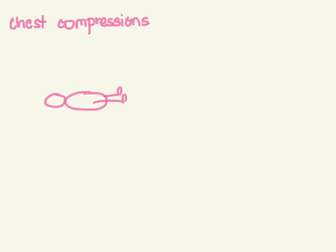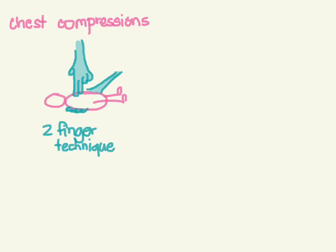There are two ways to do chest compressions in neonates. The first is the two-finger technique: one hand is placed on the sternum at the bottom third, using your index and middle finger to press down, while the other hand goes behind the baby's back. You compress about one-third of the AP diameter of the chest, which is quite deep. This is not the preferred technique.